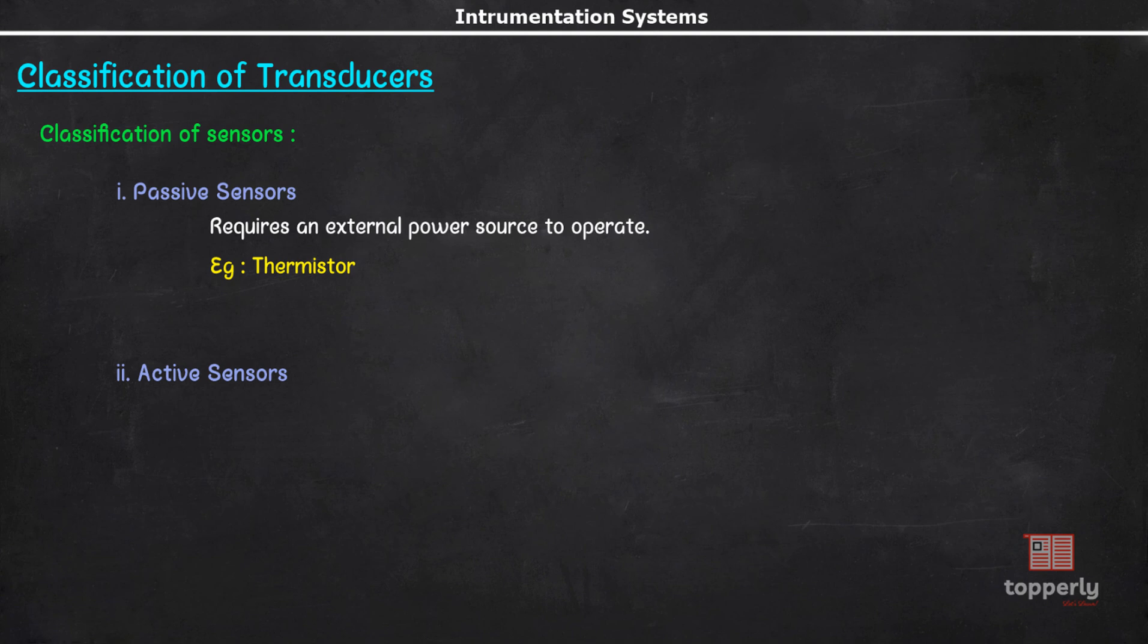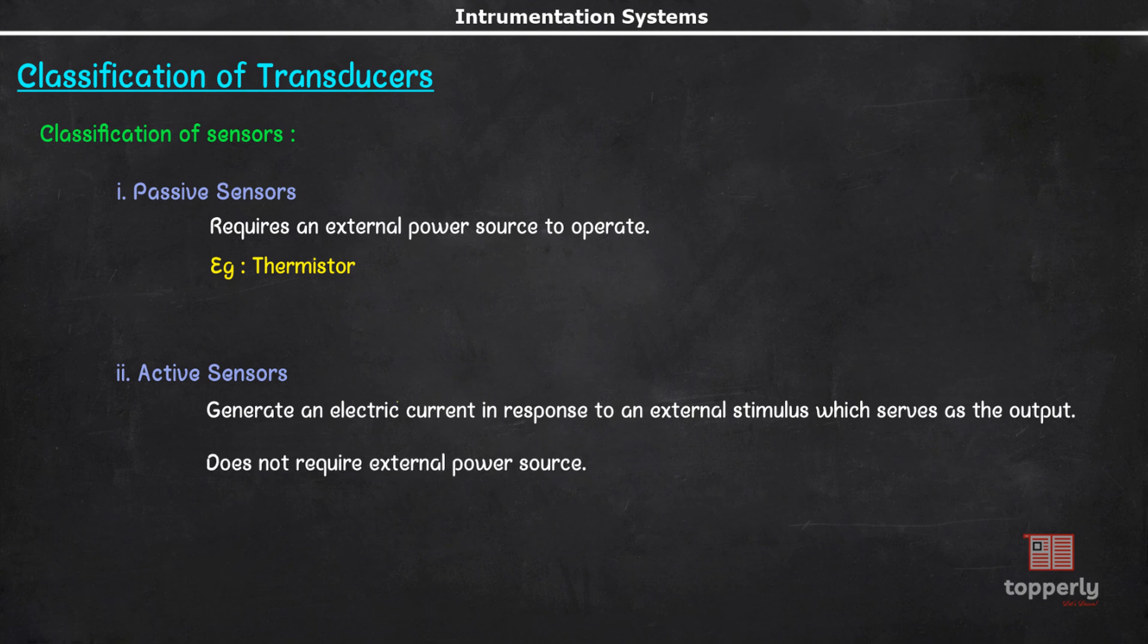Active sensors on the other hand, generate an electric current in response to an external stimulus which serves as the output without needing an additional energy source. Such examples are photodiode, piezoelectric sensor, thermocouple, etc.